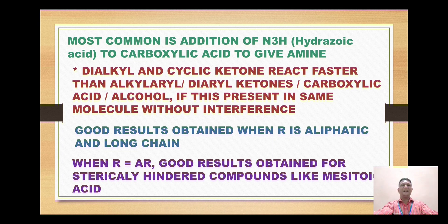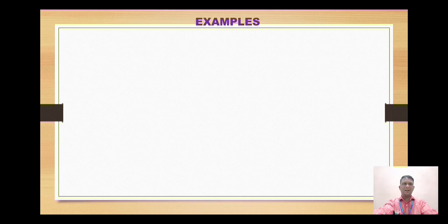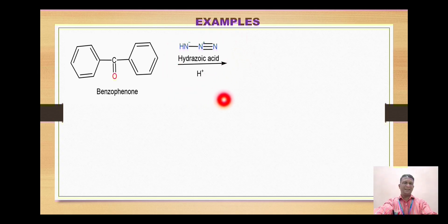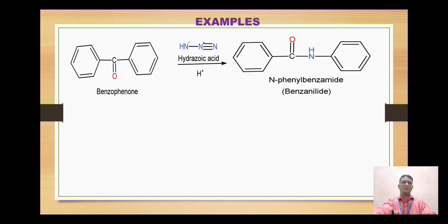Sterically hindered means the benzene or aryl ring contains substituent groups at the ortho and para positions. A classical example is the reaction of mesitoic acid. Let's look at examples of the Schmidt rearrangement: the benzoyl hydrazoic acid gives formation of the corresponding benzamide.